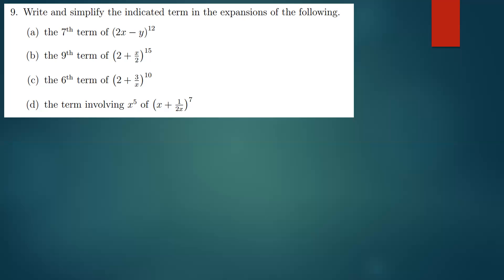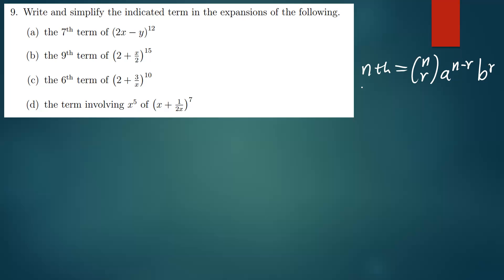The formula for the nth term is n choose r, then a to the power n minus r, then b to the power r. In some books, where there's r they use k, where there's a they use x, and where there's b they use y. This is the formula we're going to use on almost all the questions we're solving tonight.